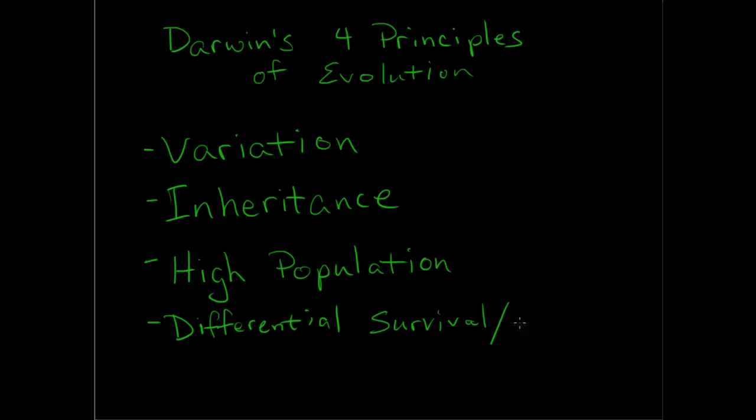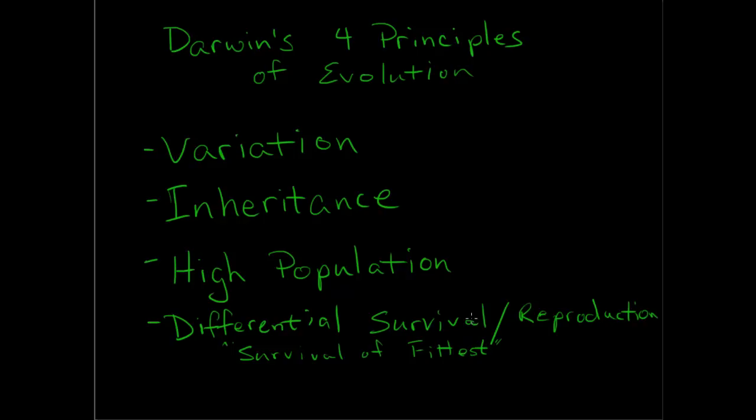This all leads us to the concept of Darwin's four principles of evolution: variation, inheritance, high population, and finally, differential survival and reproduction, also known as survival of the fittest. One by one, first one, variance or variation.